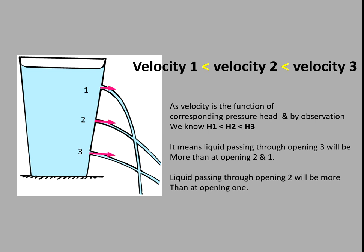Observe the picture — jet formation at positions one, two, and three. Velocity at position three is greater than two and one, as the pressure head at one is less than two and three. Jet velocity at one is less. So jet velocity is dependent on pressure head — it is a function of pressure head. We can say the flow rate is also a function of pressure head.